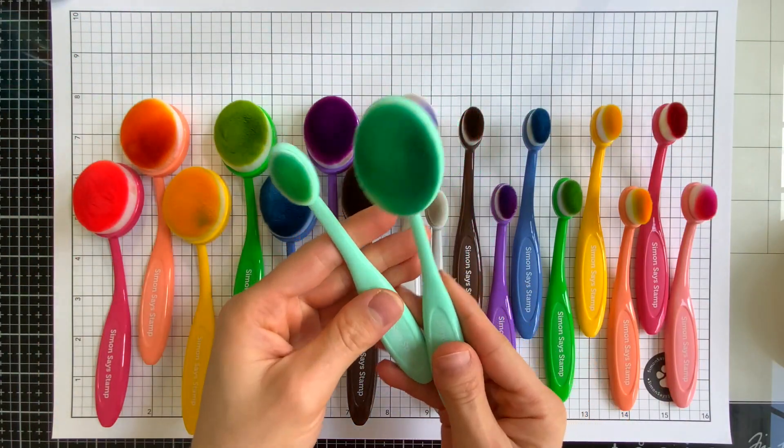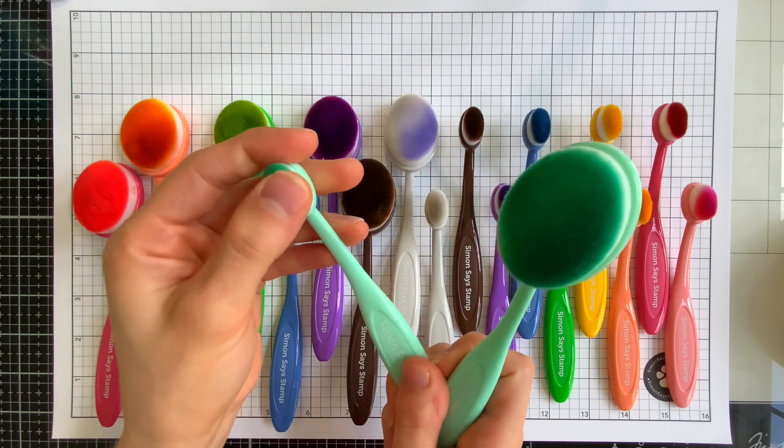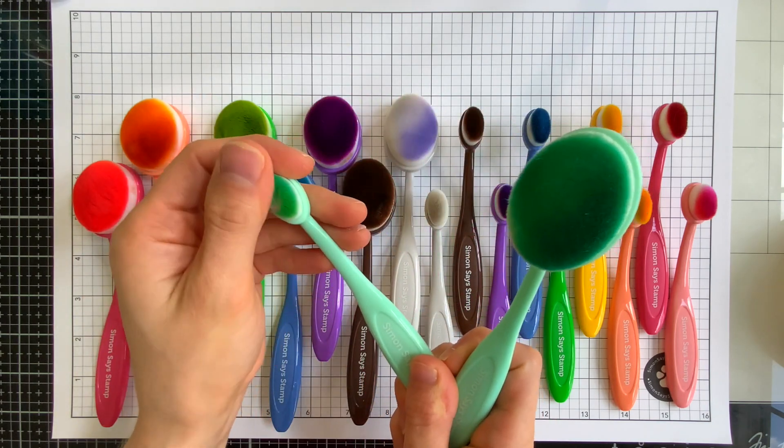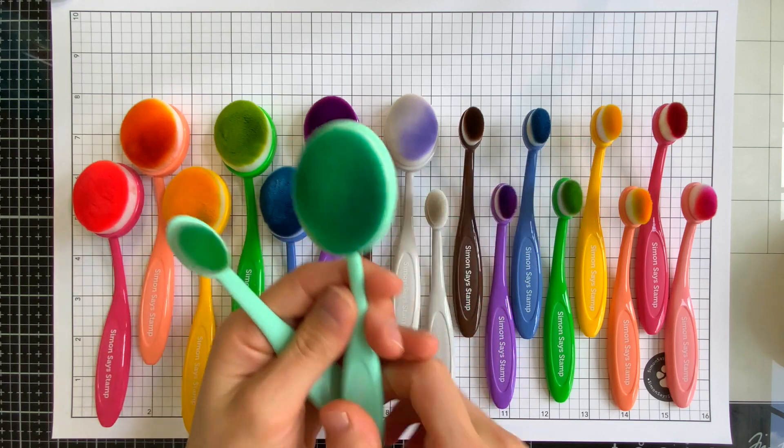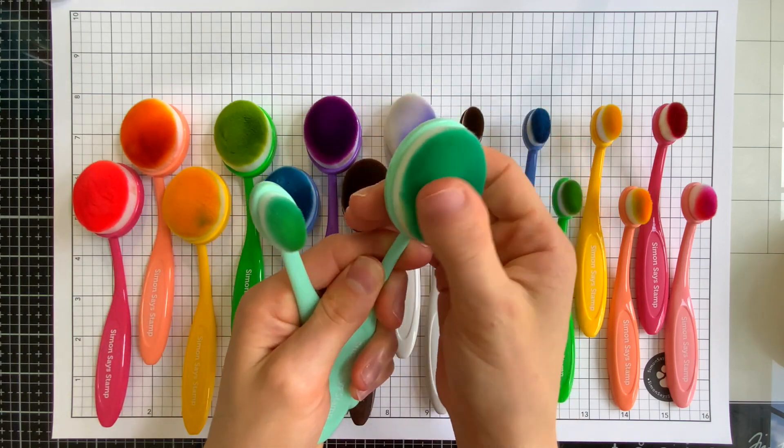There's a brush for every color family in the rainbow which is helpful if you like working with multiple colors at a time. You'll notice the soft premium hair bristles. This is an extremely valuable feature when it comes to getting a smooth blend.